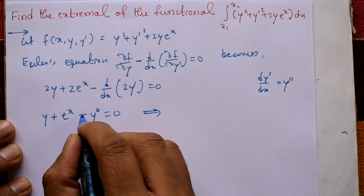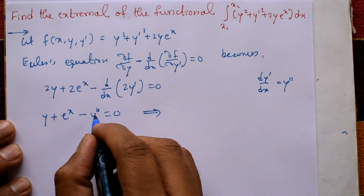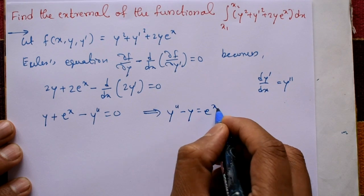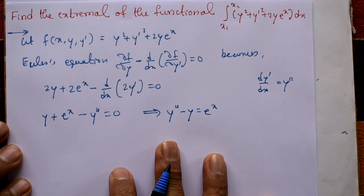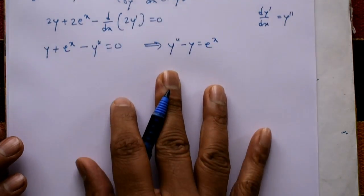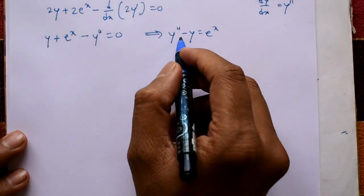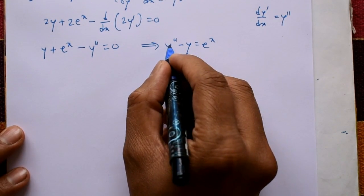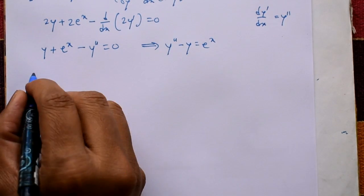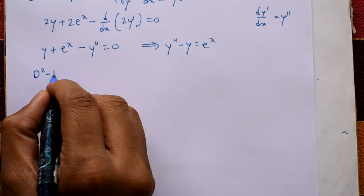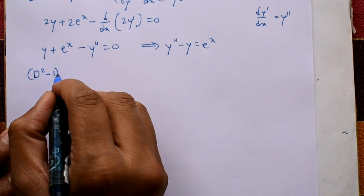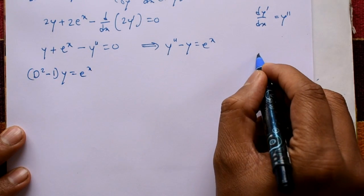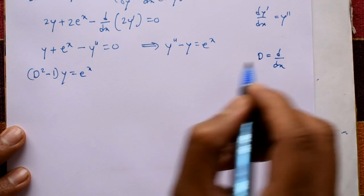Rearranging, taking these two terms to the right-hand side: y'' minus y equals eˣ. Writing in operator form: (D² - 1)y equals eˣ, where D stands for d/dx.